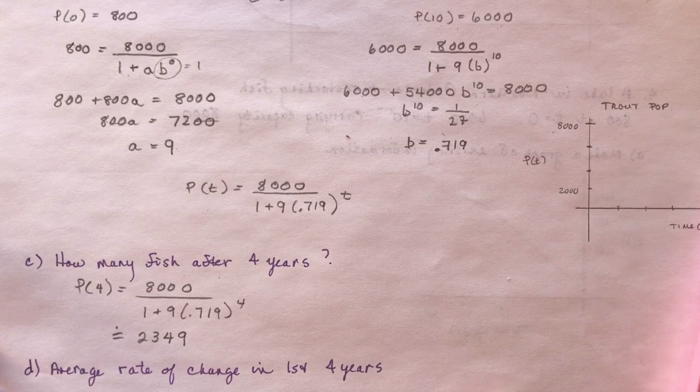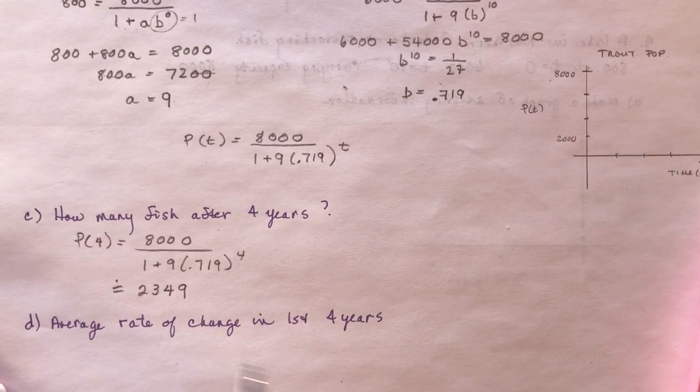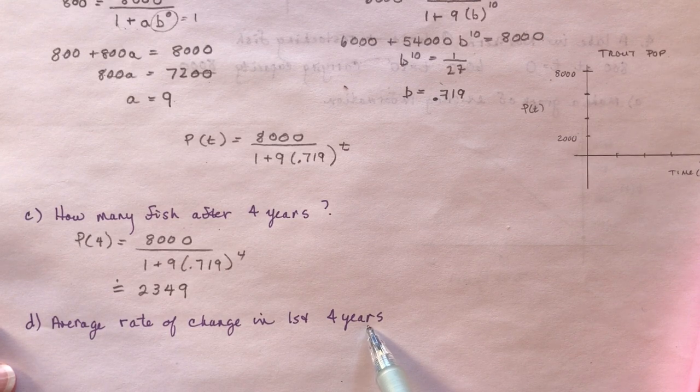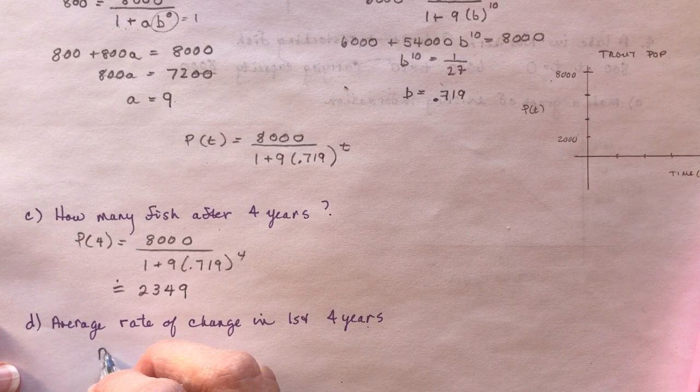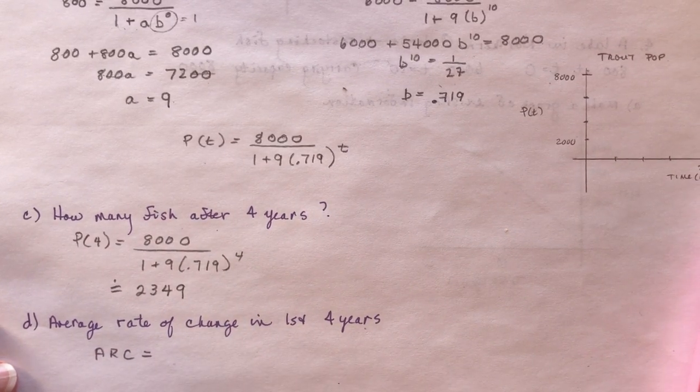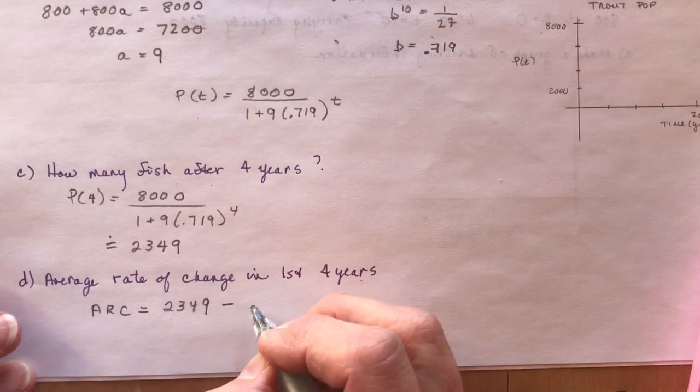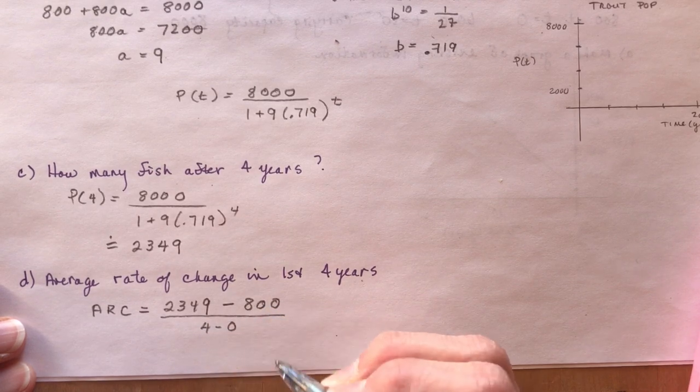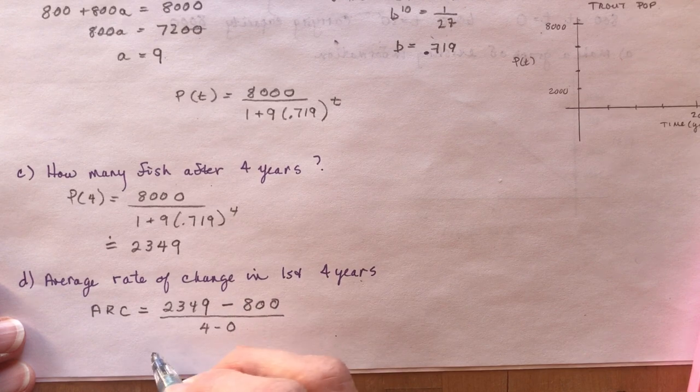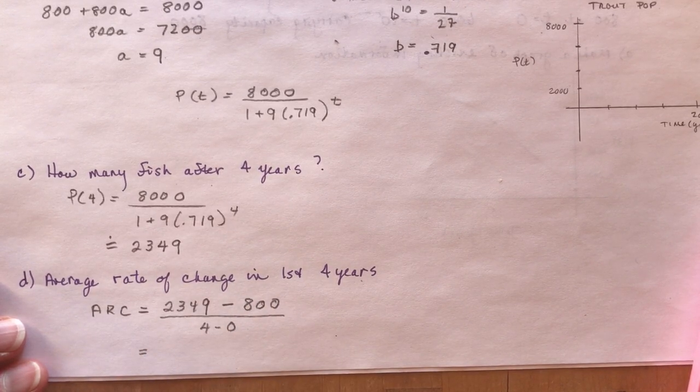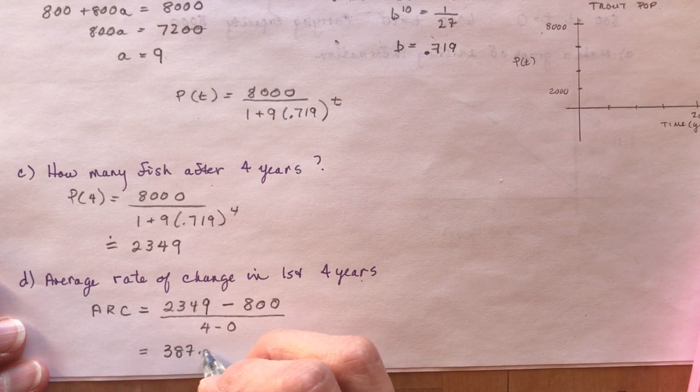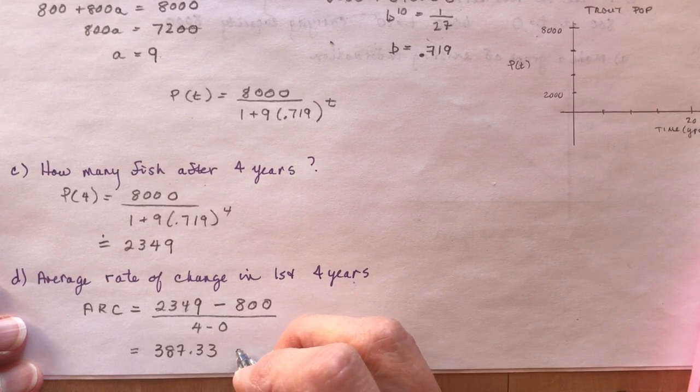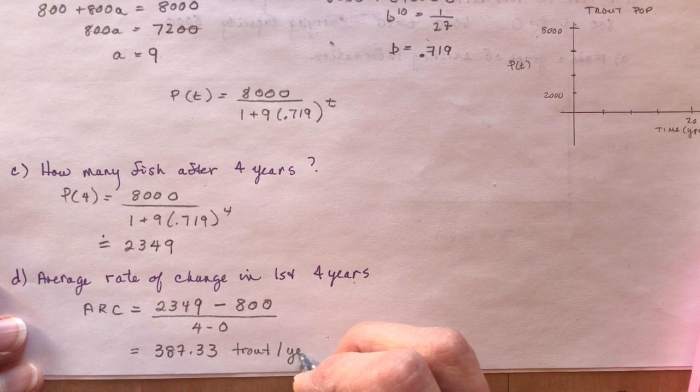Now this doesn't talk anything about the fishermen going in. And I liked it was Northern Ontario because that's where I'm from. Okay, what is the average rate of change in the first four years? So at time zero, we knew what the population was, was 800. The average rate of change equals, we have our 2,349 and we're going to subtract the initial at time zero, that was 800, divided by 4 minus 0. So it's just a slope calculation. Remember average rate of change, slope of a secant. We're going to be doing lots of that in calculus. And we get about 387.33 trout per year.